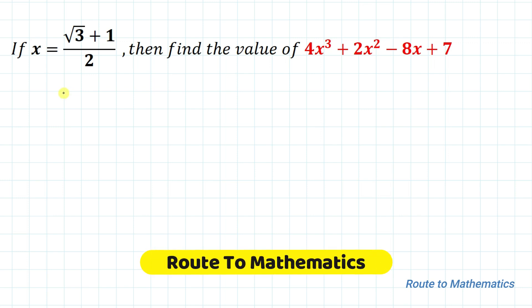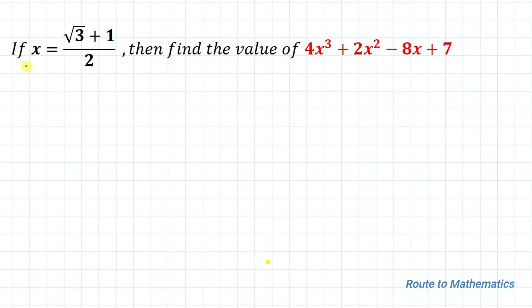Hello everyone, welcome to Root 2 Mathematics. In this video, we are going to solve this interesting question. The given question is: if x equals (√3 + 1) / 2, then find the value of 4x³ + 2x² - 8x + 7. We have been given the value of x and are asked to find the value of this polynomial. Without any delay, let's start the solution.